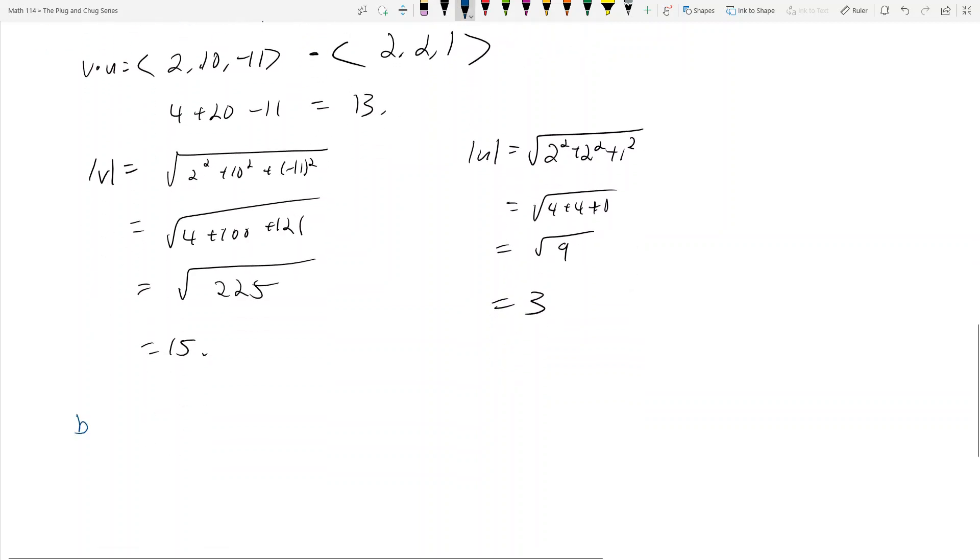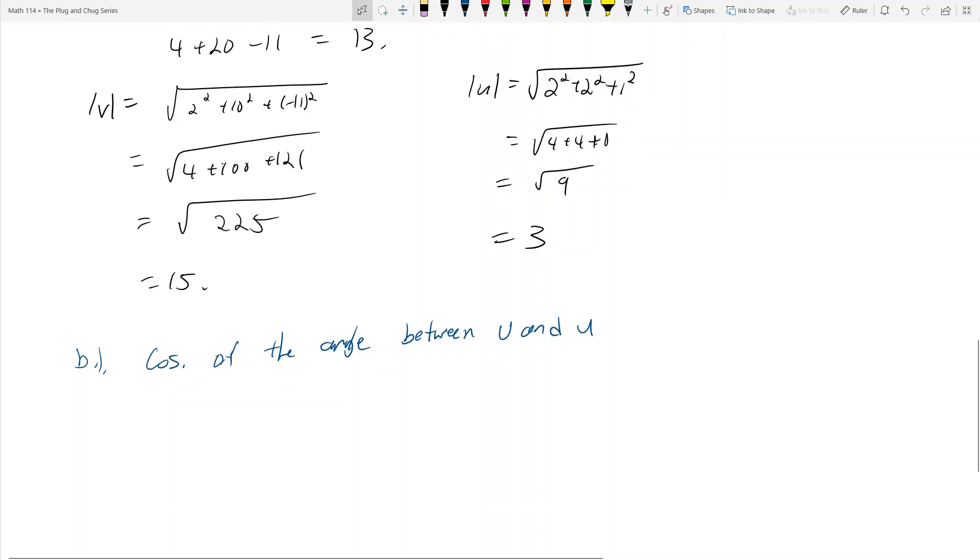What's part B? Part B asks you to find the cosine of the angle between v and u, or u and v. And so now we have to leverage property of dot product number 5, which I think is, or is this number 5? I guess this isn't a property of the dot product. It's just something that you'll have to know.